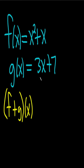We have f(x) = x² + x, g(x) = 3x + 7, and we have to find (f+g)(x).